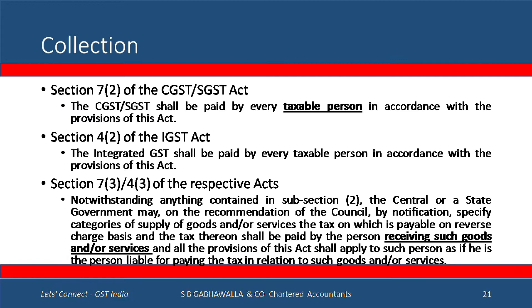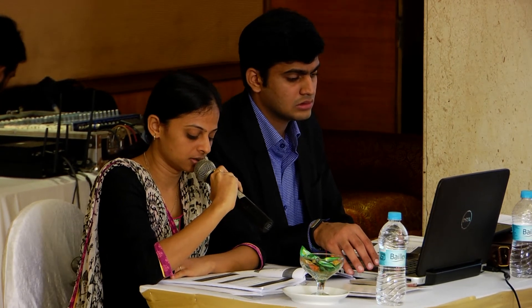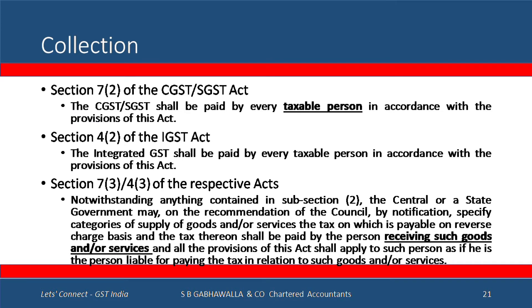Let us look at the collection. Section 7.2 of the CGST-SGST Act states the CGST and SGST Act shall be paid by every taxable person in accordance with the provisions of this Act. Further, Section 4.2 of the IGST Act states the integrated GST shall be paid by every taxable person in accordance with the provisions of this Act. Section 7.3 and 4.3 of the CGST, SGST and IGST Act states: notwithstanding anything contained in subsection 2, the central or state government may, on recommendation of the council by notification, specify categories of supply of goods and/or services, the tax on which is payable on reverse charge basis, and the tax thereon shall be paid by the person receiving such goods and/or services, and all provisions of this Act shall apply to such person as if he is a person liable for paying the tax in relation to such goods and/or services.